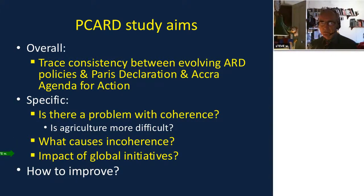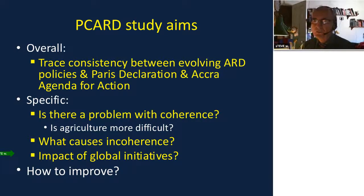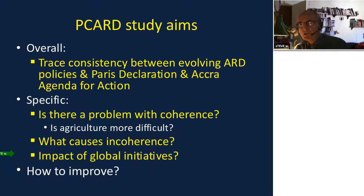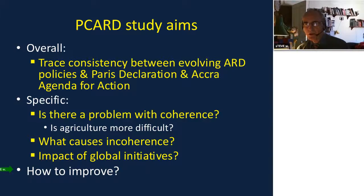If there are problems with coherence for our sector, what are the causes of that incoherence? What are the global initiatives — particularly the wave since 2007 — dealing with agricultural production, food and nutrition security, and climate change adaptation and mitigation? And what should we be doing to improve practice?